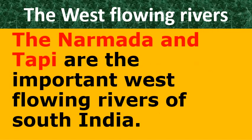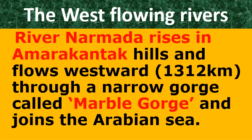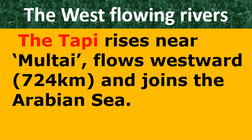Narmada and Tapi are the important west-flowing rivers. River Narmada rises in the Amarkantak hills and flows westward. The total length of this river is 1,312 km and it joins the Arabian Sea through a narrow gorge called the Marble Gorge. The Tapi River rises near Multai, flows westward, and its total length is 724 km, finally joining the Arabian Sea.